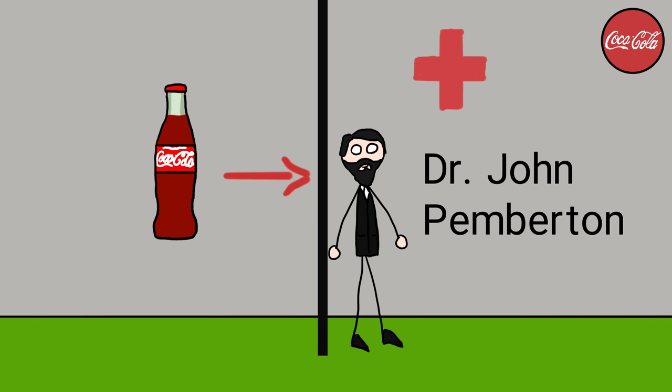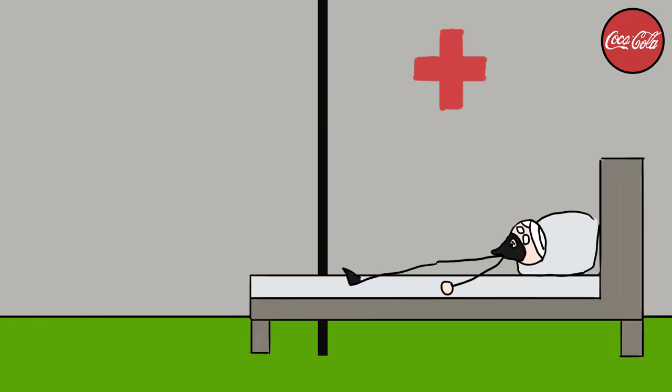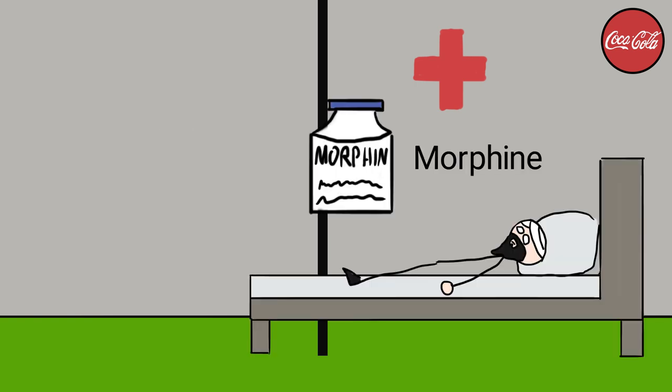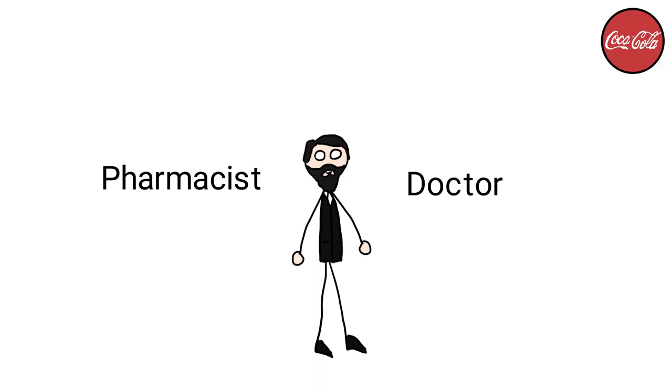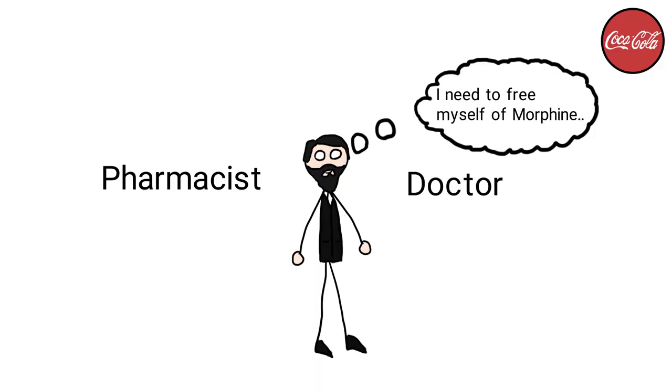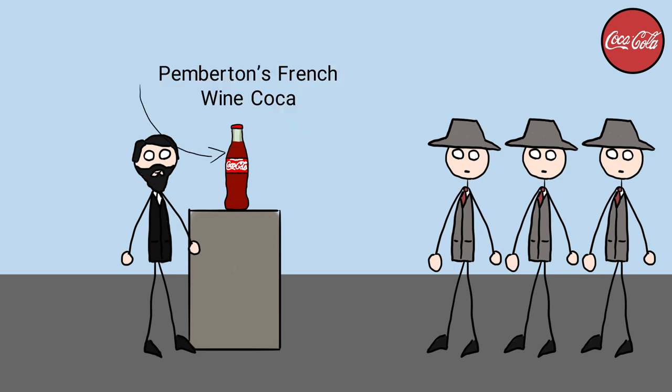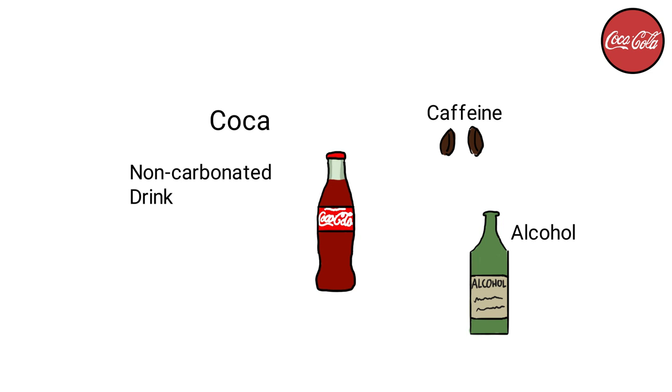The drink's creator, Dr. John Pemberton, became hooked on morphine after being hurt in the civil war as part of the Confederate army. Being a doctor and a pharmacist, he wanted to create something to wean himself off the drug. The result was Pemberton's French wine coca, and it was way different than the cola you get today. The first version of cola was a non-carbonated drink that contained a mixture of alcohol, coca, caffeine, and yes, a bit of that cocaina.